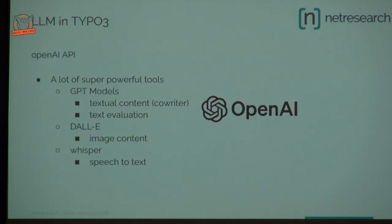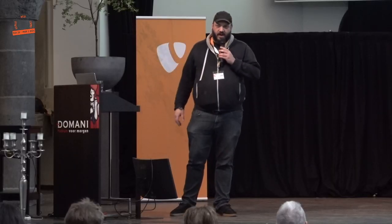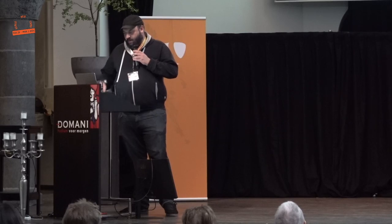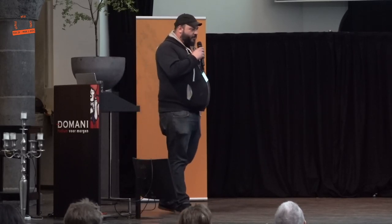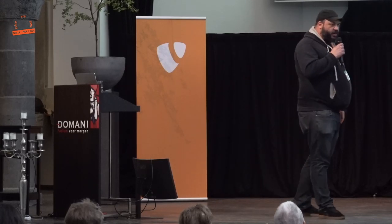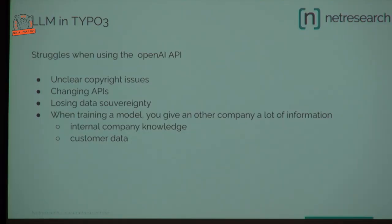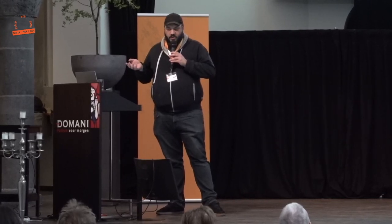But you can still use OpenAI. OpenAI has many great tools — large GPT models that are amazing at generating and evaluating text. They have the DALL-E model, which is great at generating images, and the Whisper model via the OpenAI API, whose main purpose is speech-to-text. However, many professional users are struggling with the OpenAI API because of unclear copyright: who owns the generated texts — you, your customer, or OpenAI?